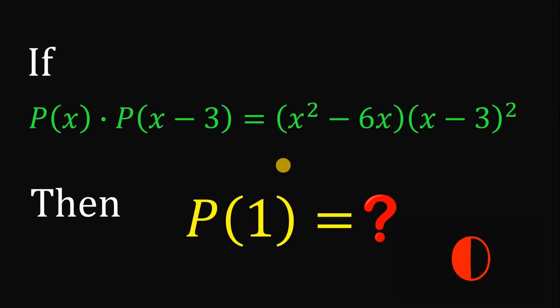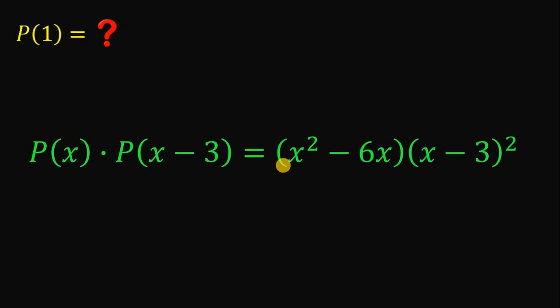Now let's answer this question together. So given this equation P(x) times P(x minus 3) equals x squared minus 6x multiply by x minus 3 quantity squared, our goal is to find the value of P(1).